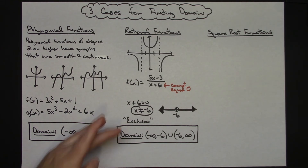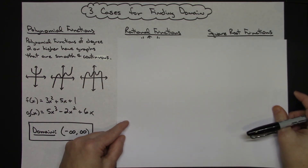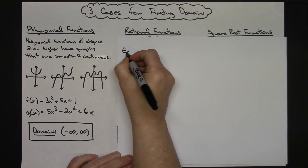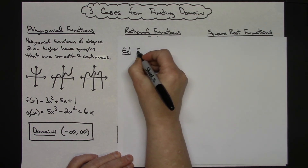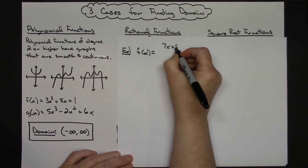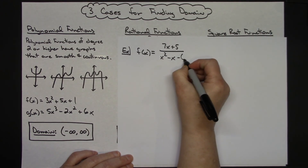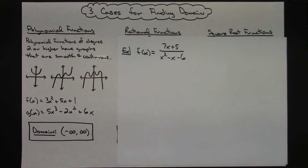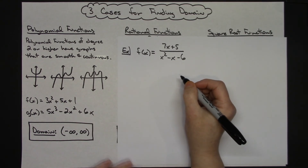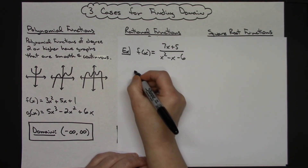That one was pretty easy and you didn't really need to algebraically set that equal to zero to find the exclusion. Let's do another rational function example that maybe is a little bit harder to see. Let's suppose that our function was f of x equals 7x plus 5 over x squared minus x minus 6. That rational function is going to be a little bit harder to look at — you're not going to be able to immediately know what values have to be excluded.